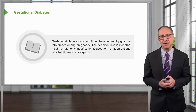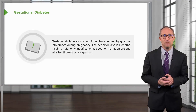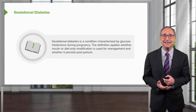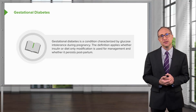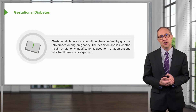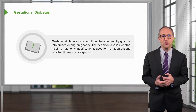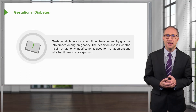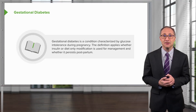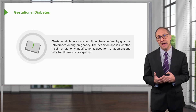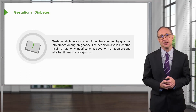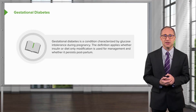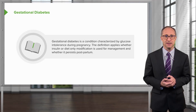Gestational diabetes, or pregnancy-induced diabetes, is any degree of glucose intolerance with onset or first recognition during pregnancy. The definition applies whether insulin or only diet modification is used for treatment, and whether or not the condition persists after pregnancy.